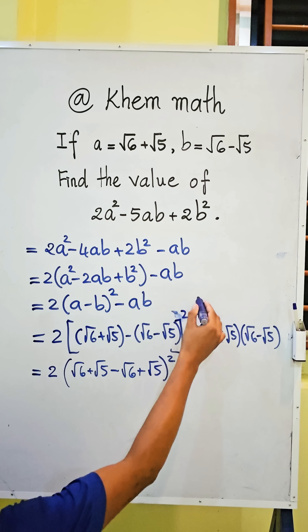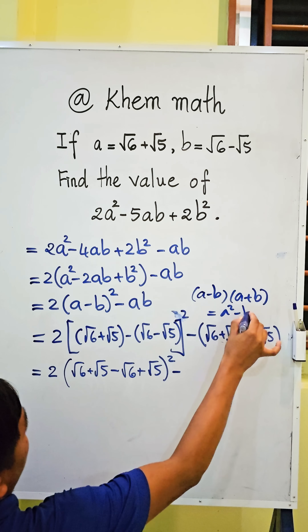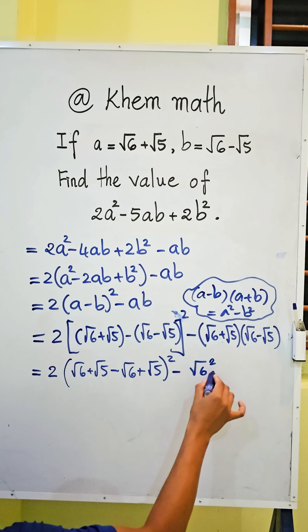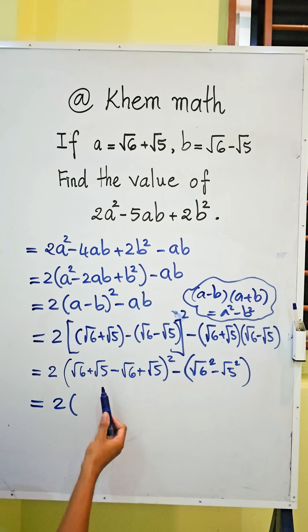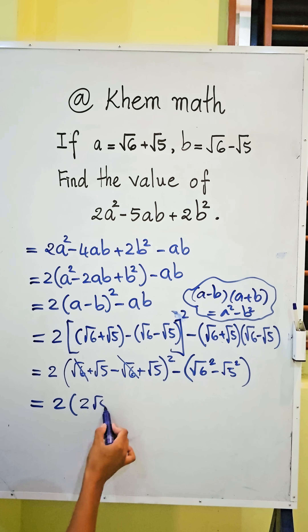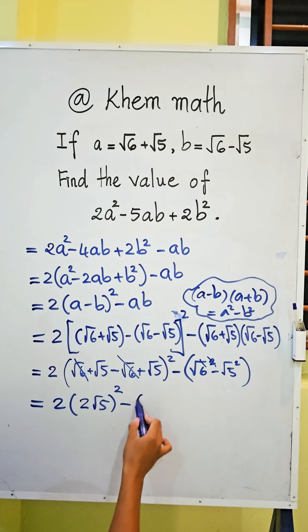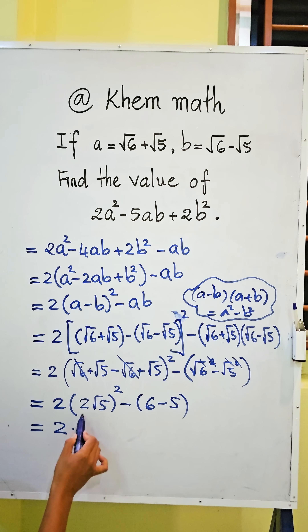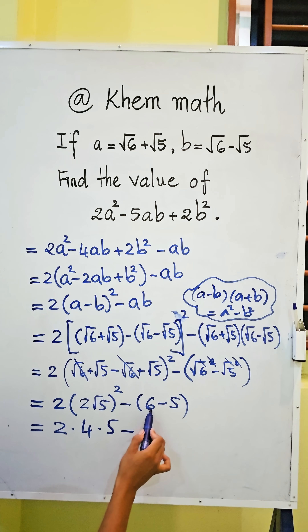We use the formula (a minus b)(a plus b) equals a squared minus b squared. Applying this, square root 6 times square root 6 gives 6, and square root 5 times square root 5 gives 5. Inside the bracket we get 2 times square root 5, so we get 2 times 4 times 5, and minus (6 minus 5), which gives minus 1.